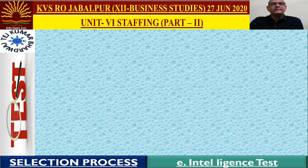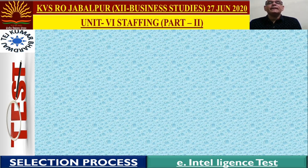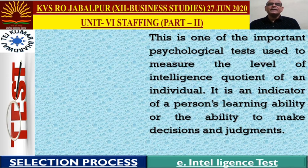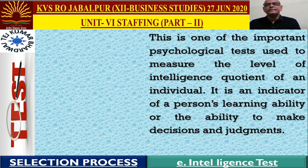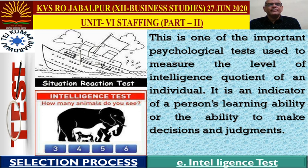The fifth type is the intelligence test — another very important test. Intelligence is the practical application of theoretical knowledge in real-life situations, measured as IQ. In the intelligence test, we judge a person's ability to take decisions and make judgments in a given situation. Situation reaction tests and IQ tests are conducted to assess how prompt and accurate a person is, and what kind of decision-making ability they possess.